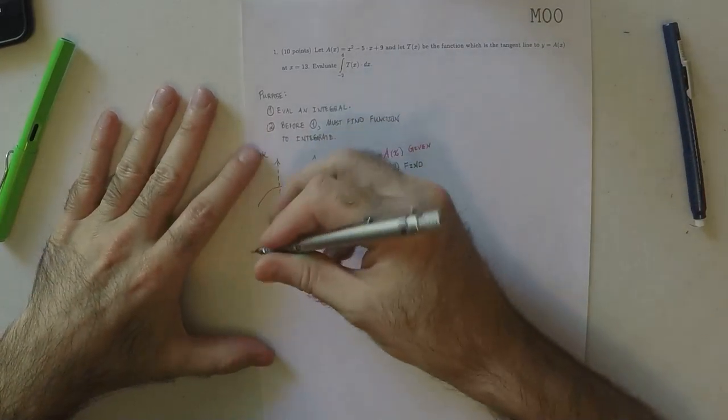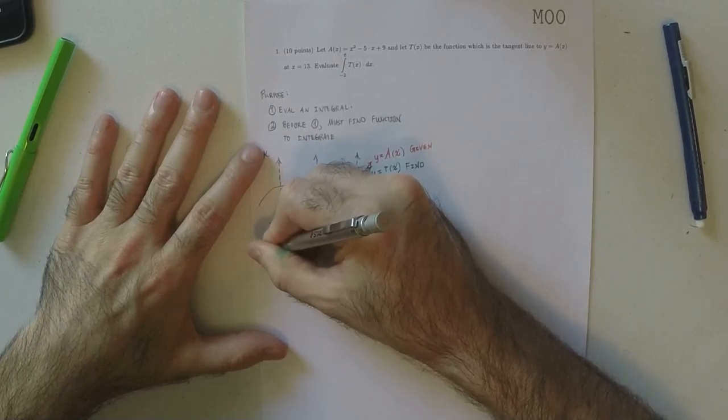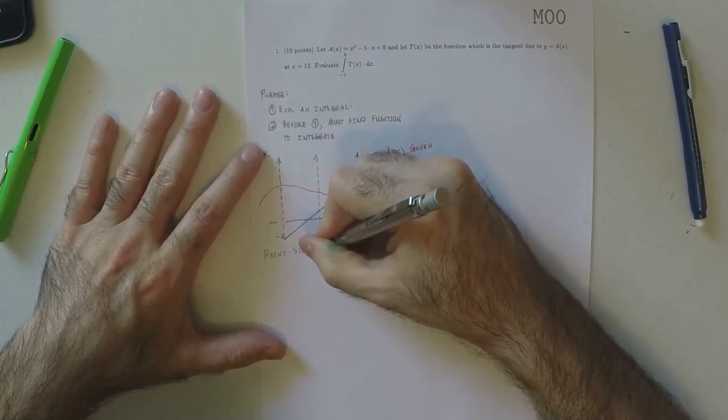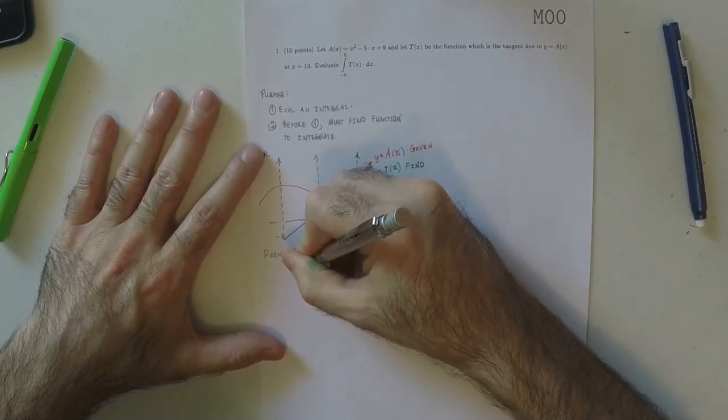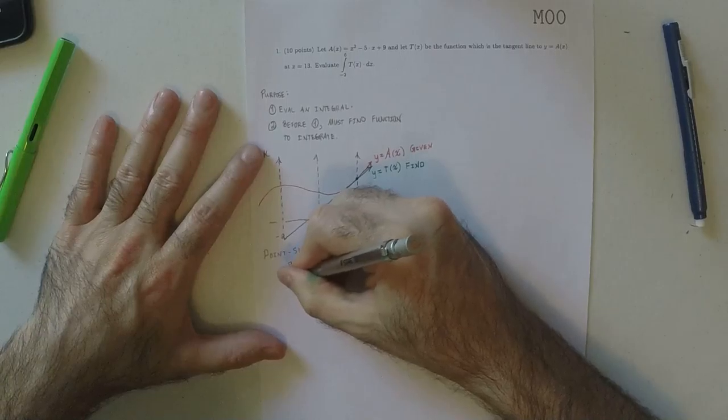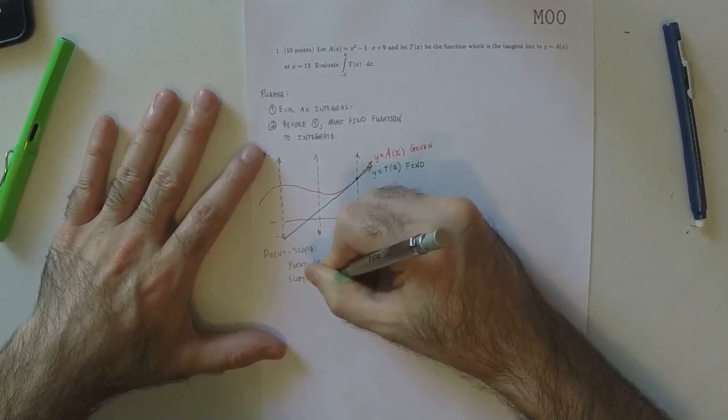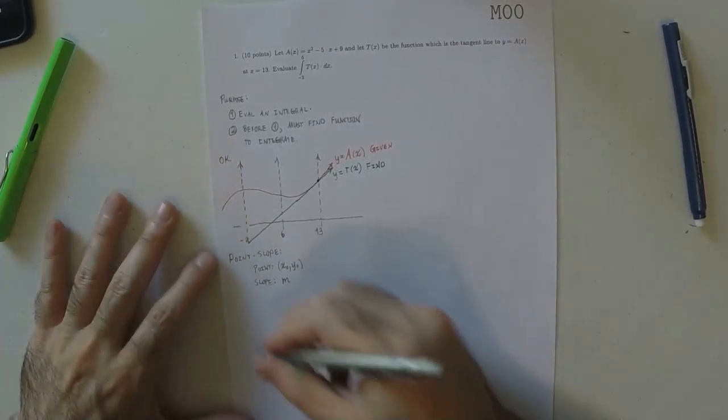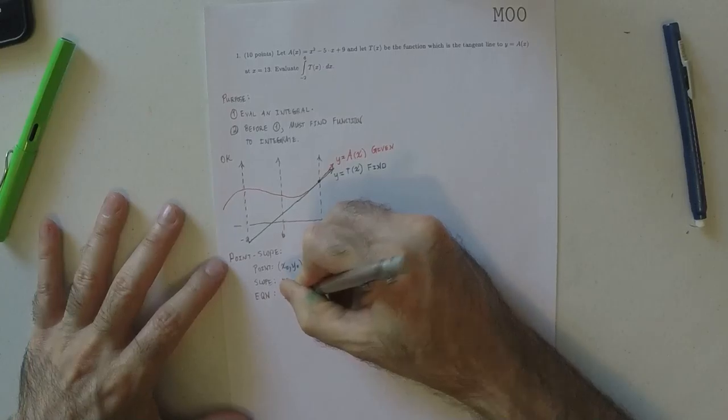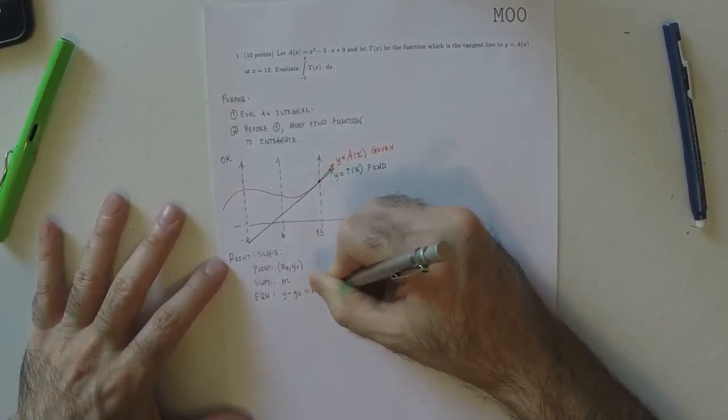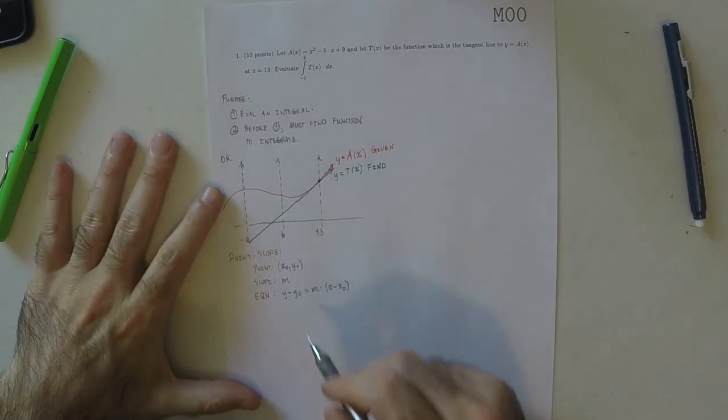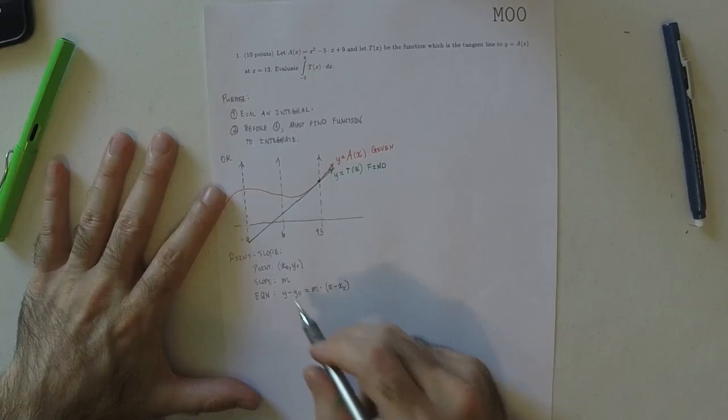Alright. So to find the equation of a line, we use the point-slope formula. So if you know the point x0, y0 is on the line and you know the slope is m, then the equation of the line is y minus y0 is m multiplied by x minus x0. So what we need to do is find a point and a slope.